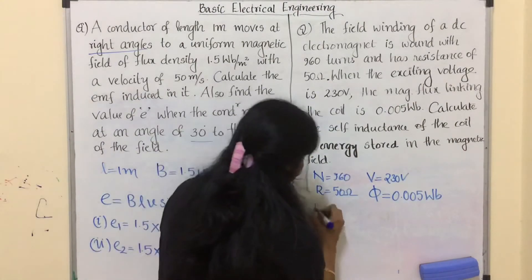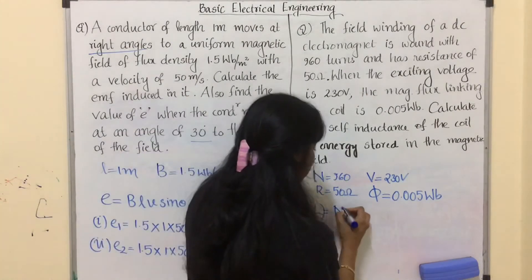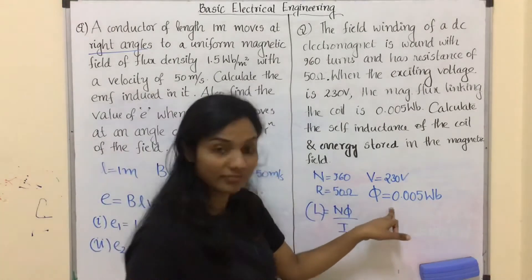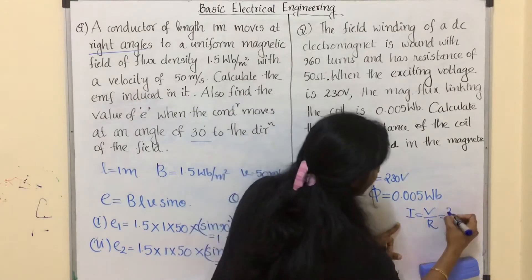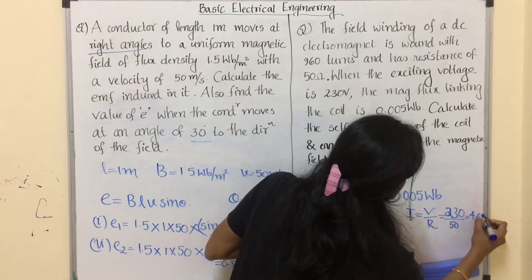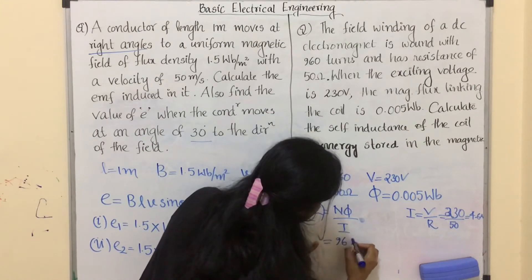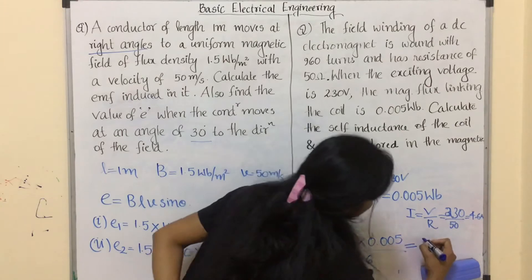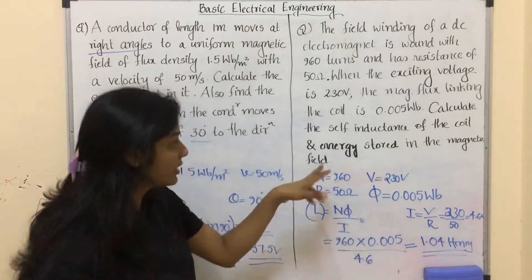Direct application of formula: self-inductance L = Nφ / I. We have N = 960 and φ = 0.005 weber. We calculate current I = V/R = 230 / 50 = 4.6 ampere. Applying the values: L = 960 × 0.005 / 4.6 = 1.04 henry. The unit for inductance is henry.